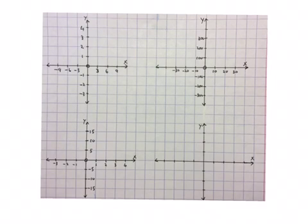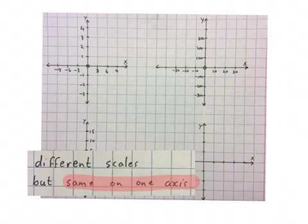The next one, on the x-axis, I took intervals of 1. So it's 0, 1, 2, 3, 4, and minus 1, minus 2, minus 3. And then up here, I went with 5, 10, 15, minus 5, minus 10, minus 15. So we can use different scales, but the same scale on one axis.